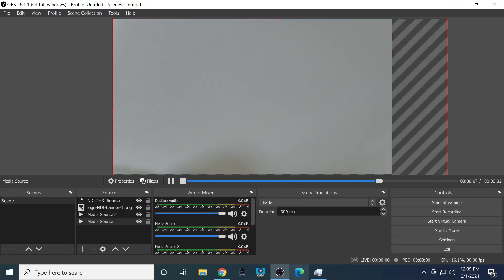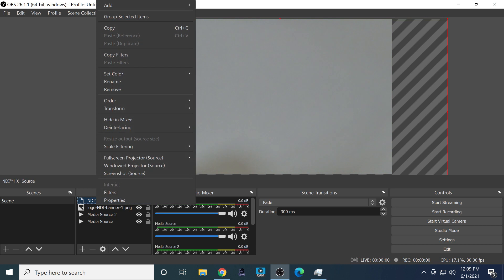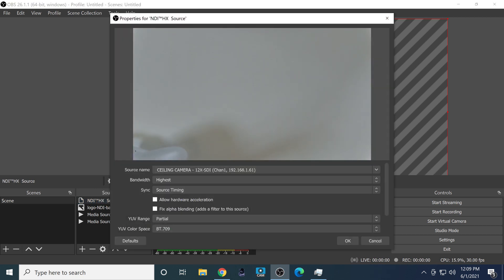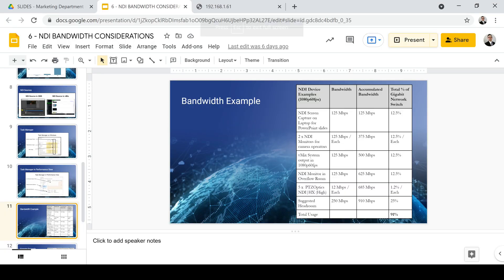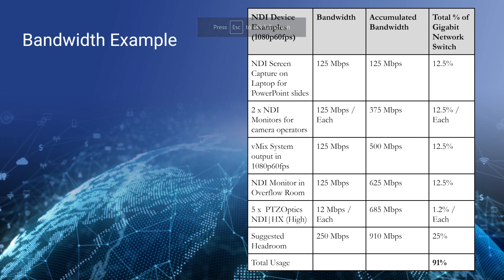Looking back at the NDI source properties in OBS, there's all that bandwidth opportunity to adjust — the ceiling camera and its IP address reinforce what we're talking about. Getting to the end of this chart though, with the suggested headroom we've used 91% of the bandwidth available on a gigabit switch — so you can see it happens quickly. You've already learned in this course that there is an NDI HX screen capture that will reduce the bitrate required, so there are ways to use NDI HX to reduce overall bandwidth, which becomes even more important on corporate networks not dedicated just to NDI video.